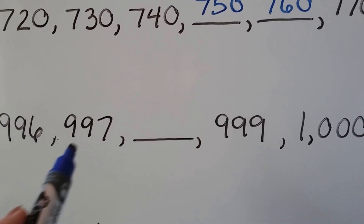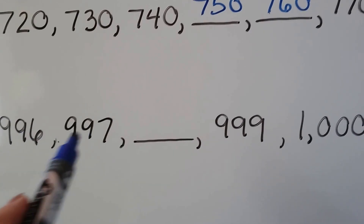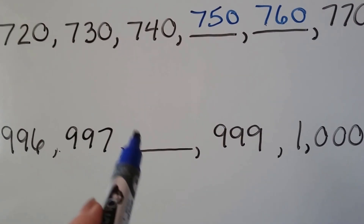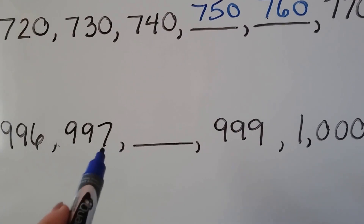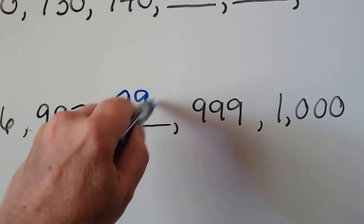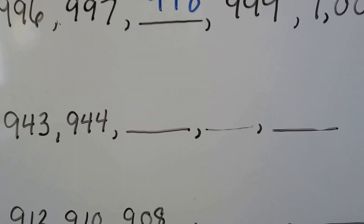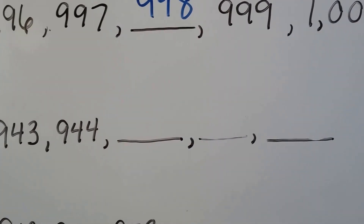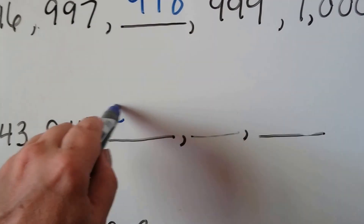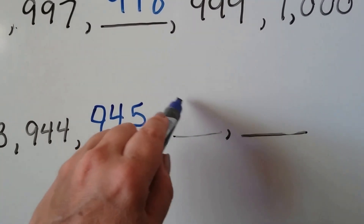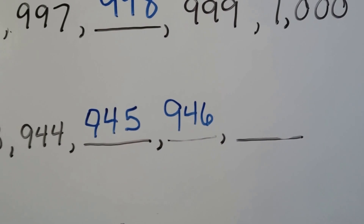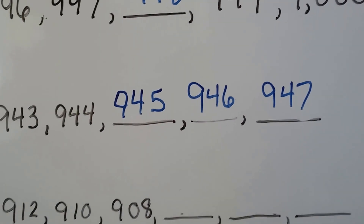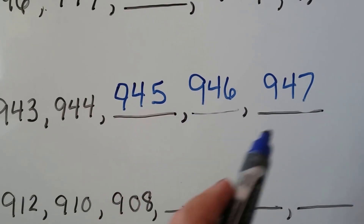How about 996, 997? The change between those two is just 1, going from 6 to 7. And the change between 999 and 1,000 is just 1, so it must be changing by 1. What's 1 more than 997? 998. Let's try 943, 944 — what would go next? If you said 945, you're right, and then 946, and 947. It went up by 1: 943, 944, 945, 946, 947.